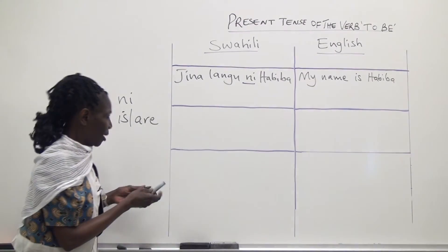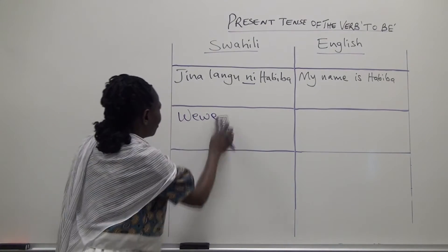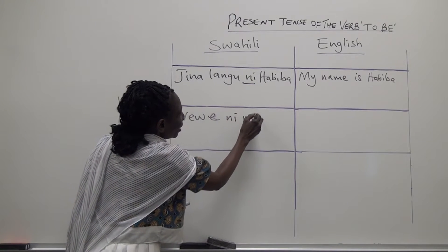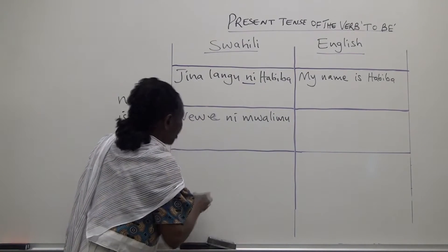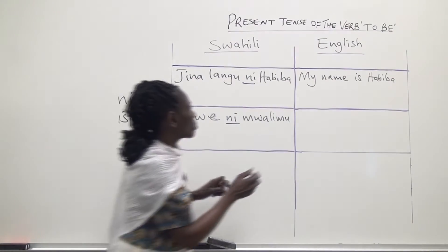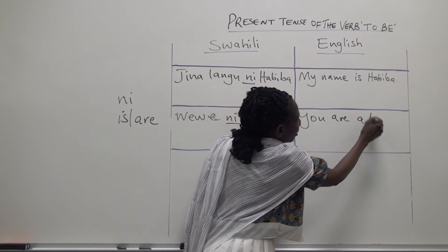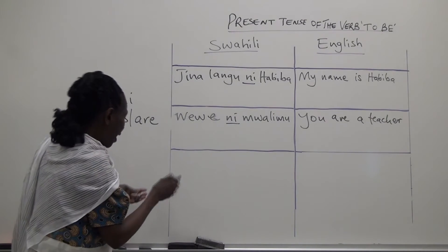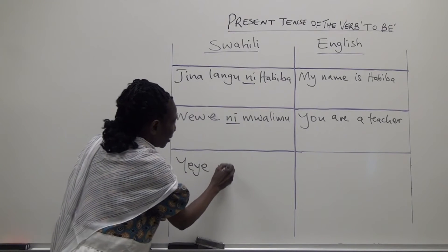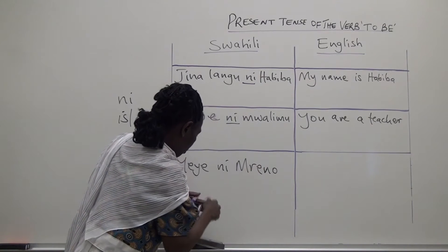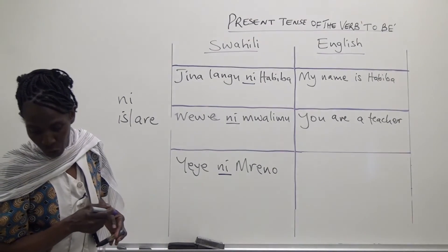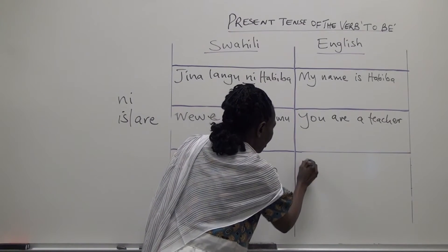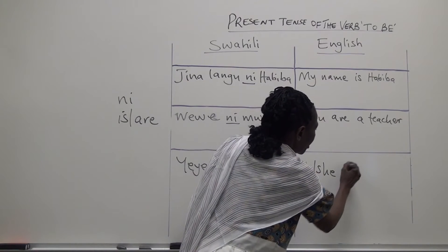Another sentence would be: 'Wewe ni mwalimu.' And the English translation of this sentence would be: you are a teacher. A third sentence would be: 'Yeye ni Mreno.' And the translation in English would be: he/she is Portuguese.